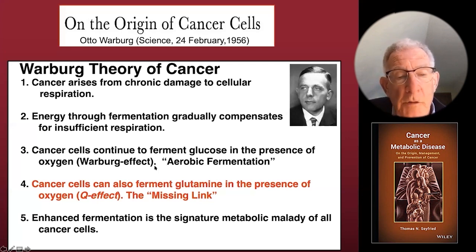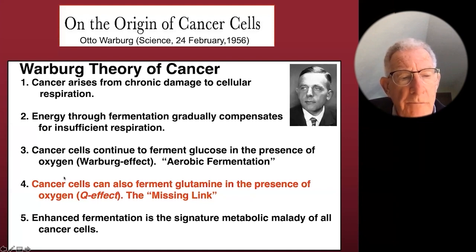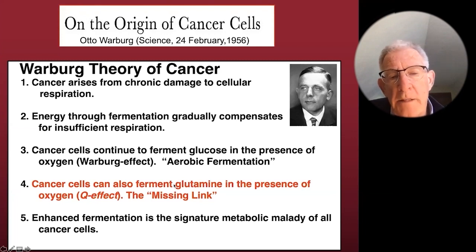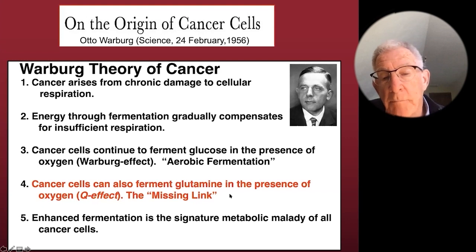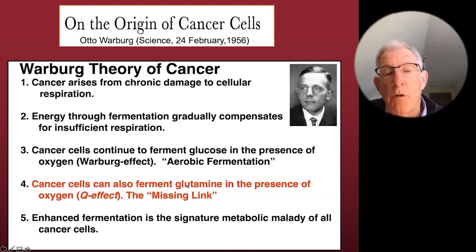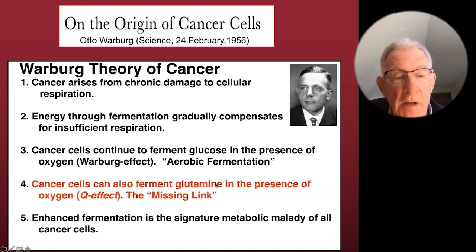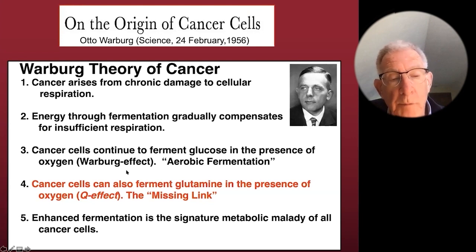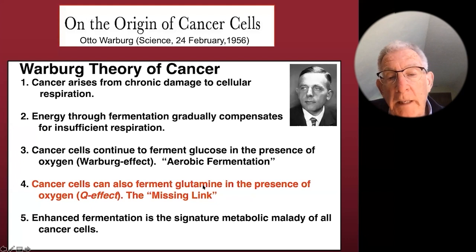Now, there was a lot of controversy about Warburg's findings, but we filled in the gap — we discovered that cancer cells also ferment an amino acid, glutamine. Glutamine is the most abundant amino acid in our bloodstream and in our body. And cancer cells will ferment glutamine; they can burn glutamine in the absence of oxygen for energy. We call this the Q effect, to distinguish it from the Warburg effect. Q is the single-letter identifier for glutamine in biochemistry.